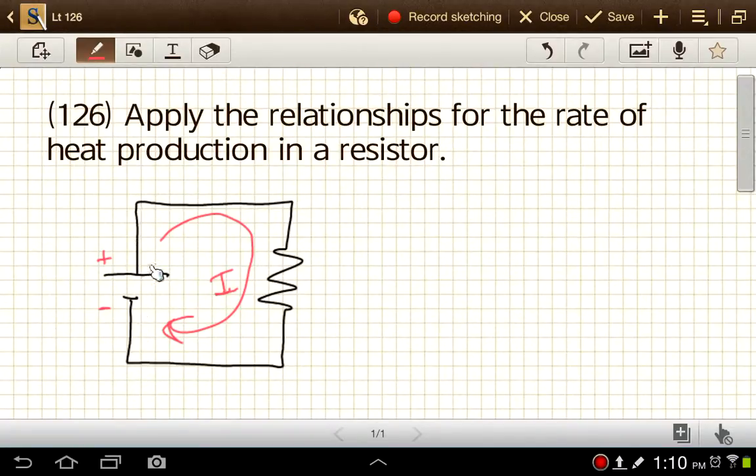Okay, so we've got our battery shown here. And then our resistor, we just draw as a squiggly line. So straight line for a wire, squiggly line for a resistor, straight line for a wire. That's it. Pretty simple schematic here.